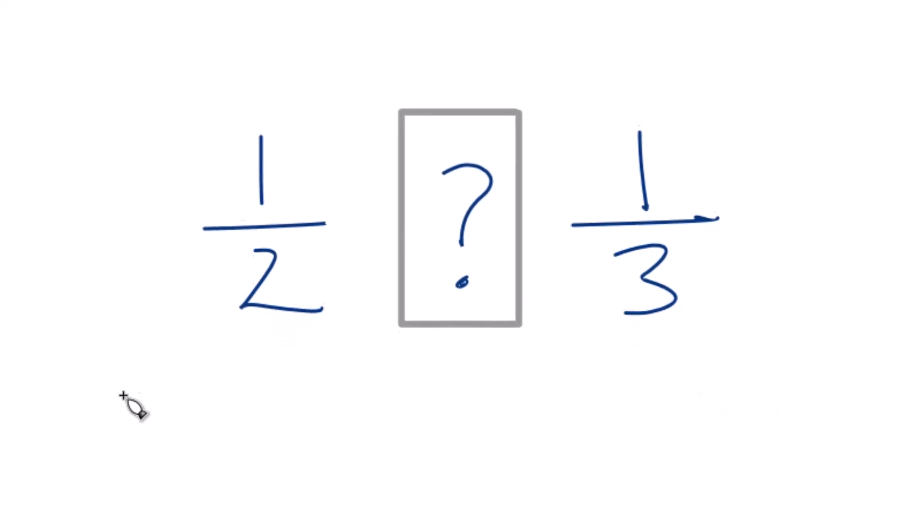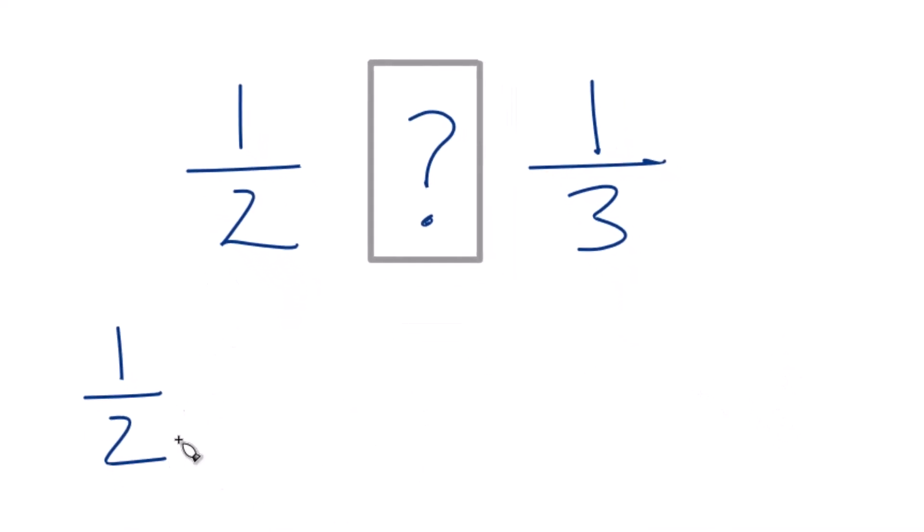Use this general formula, 1 half times A plus B. That's going to give us the number that's halfway between these two numbers here. Essentially, we're just adding these together, dividing by 2.